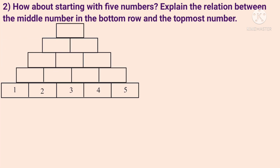Next problem: how about starting with 5 numbers? Explain the relation between the middle number in the bottom row and the topmost number using algebra. The bottom row has 5 consecutive numbers. Fill in the number pyramid and find the relation between the bottom row middle number and the topmost number.